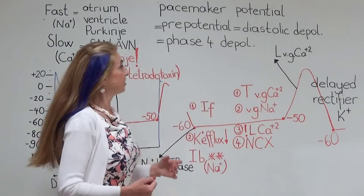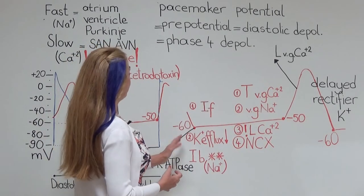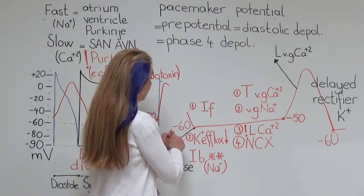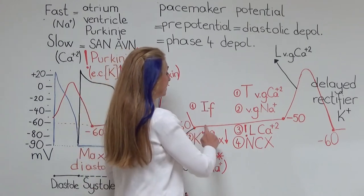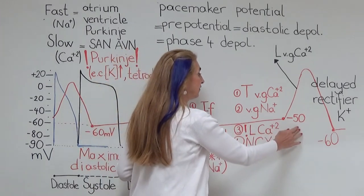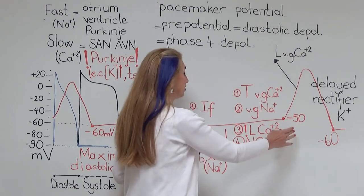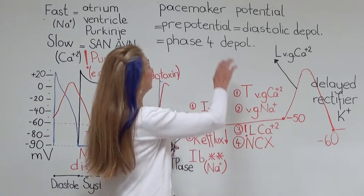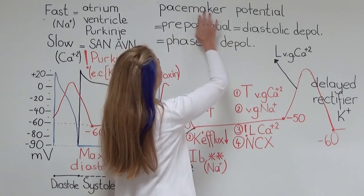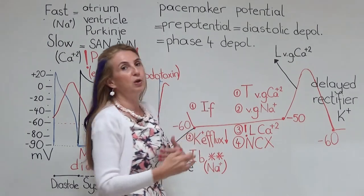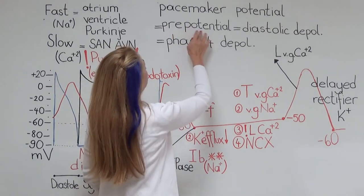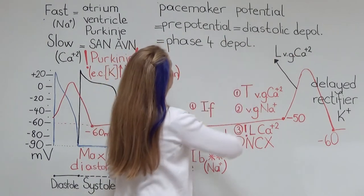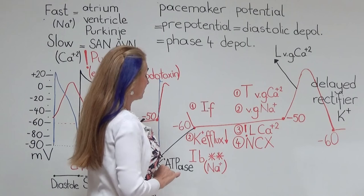Now let us look at the ion channels that produce the slow wave. After a maximum diastolic depolarization of approximately minus 60 mV, the cell gradually depolarizes to minus 50 mV, the threshold of the action potential. This change from minus 60 to minus 50 is called the pacemaker potential — also known as the prepotential, diastolic depolarization, or phase IV depolarization.